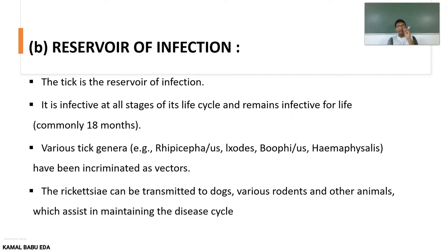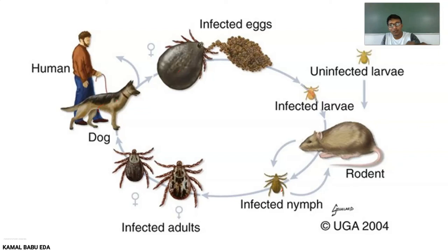The tick is the reservoir of infection, and it is infected across all its life stages. The average lifespan of this tick is about 18 months. This rickettsia can be transmitted to dogs, various rodents, and other animals, which assist in maintaining the disease cycle.